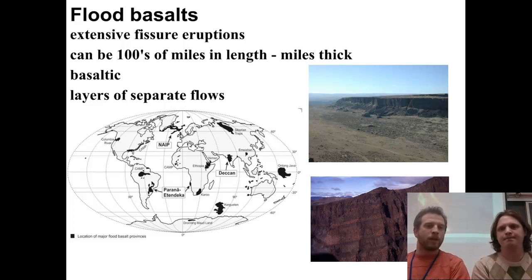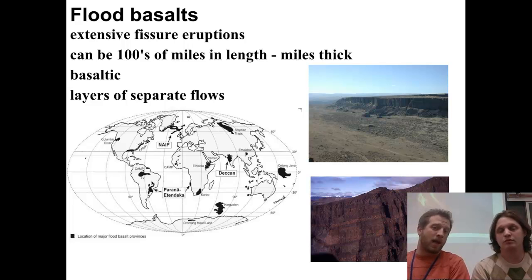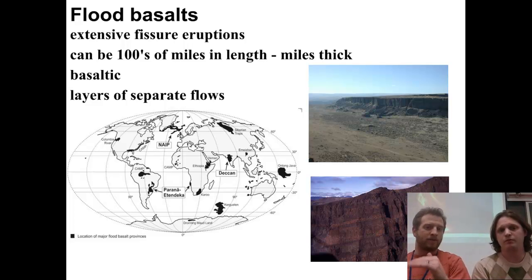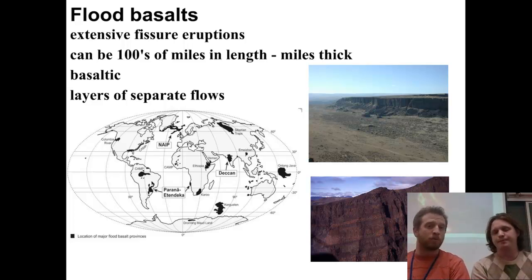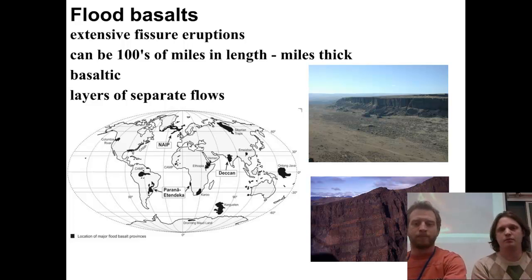We've got the Columbia River basalt here on the west coast of America, the Deccan Traps — one of the more popular ones — and the Siberian Traps in northern Russia. As we say here, hundreds of miles long, miles thick. You can have different layers from different flows of the mantle plume.